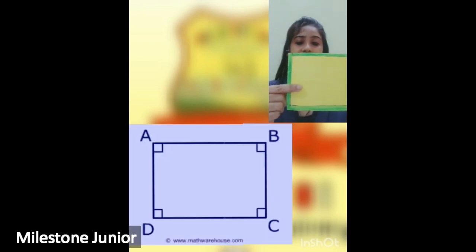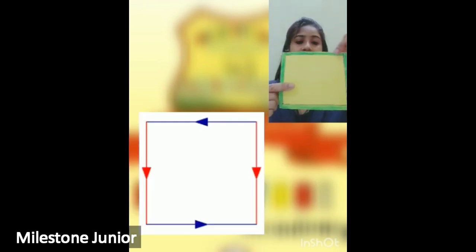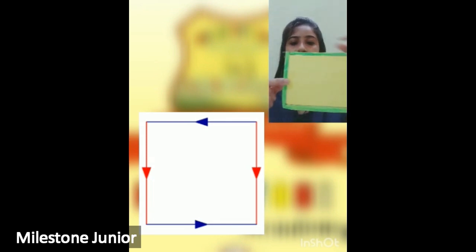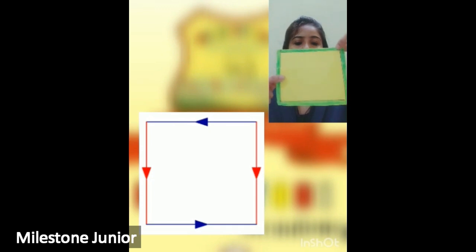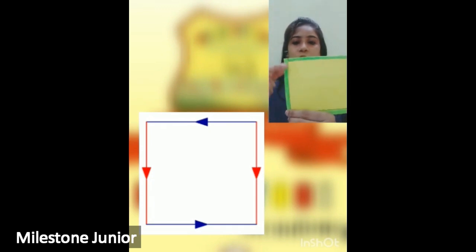A square is a shape with four equal sides and four corners. One, two, three and four.